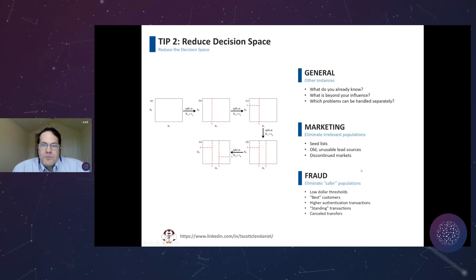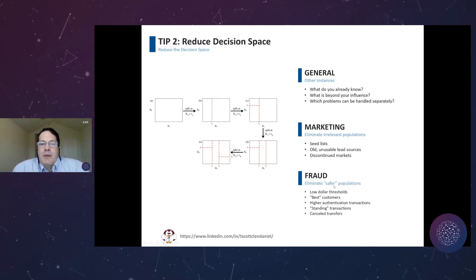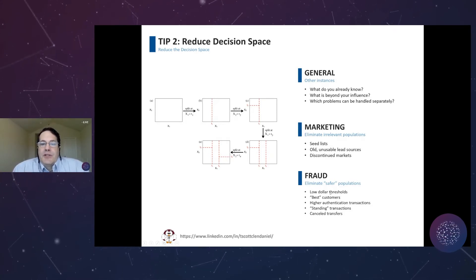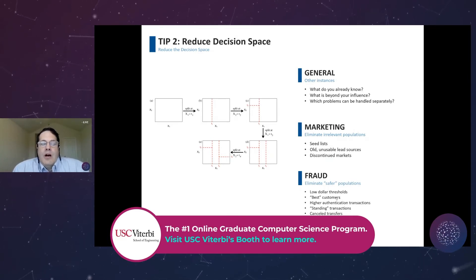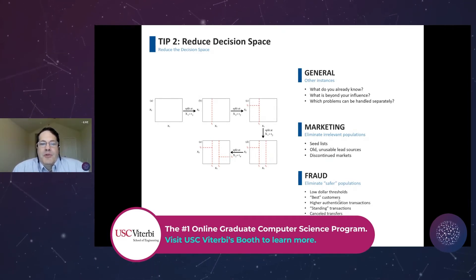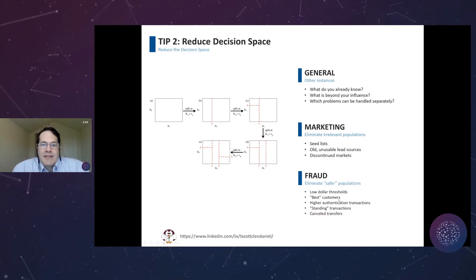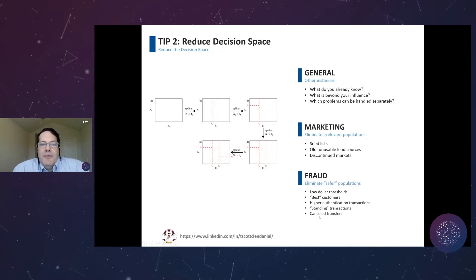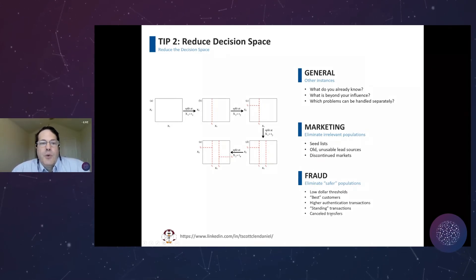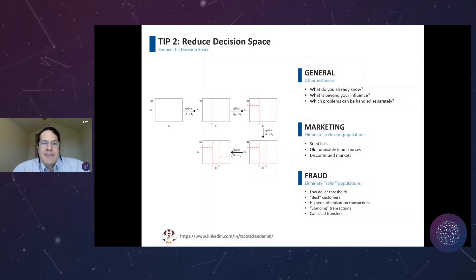In fraud: consider low dollar thresholds — are you really concerned about transactions under $10? You may have a list of best customers where senior management has said under no circumstances do you put them in a fraud queue — you'd better pull them out of your analysis. Also consider higher authentication transactions, standing transactions, and canceled transfers. You want to make sure you're limiting your analysis to things you can take action on.